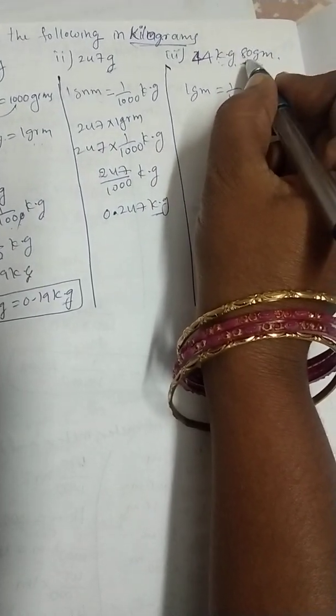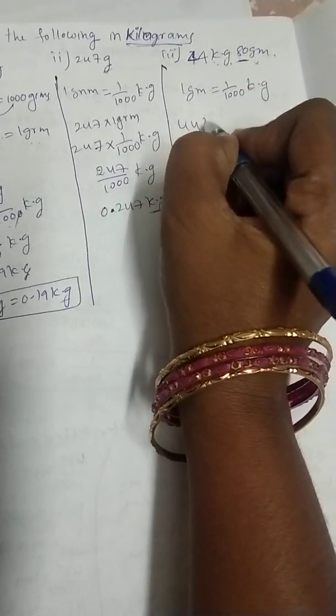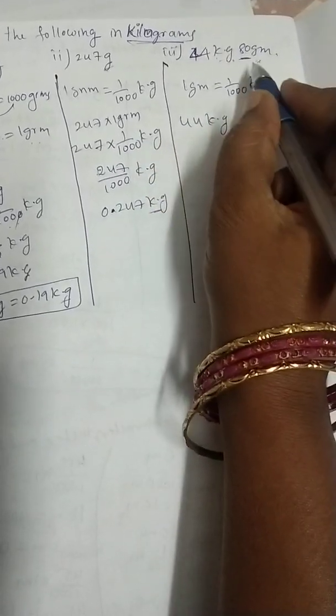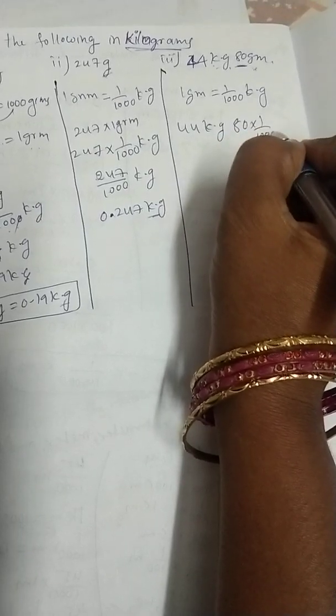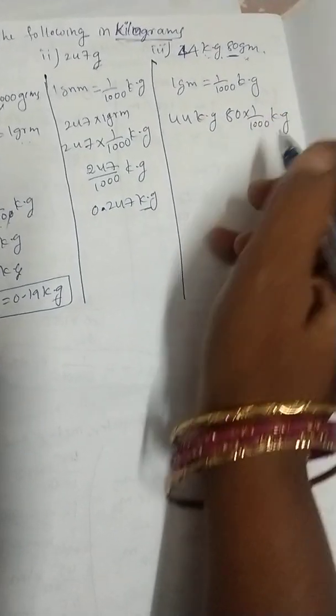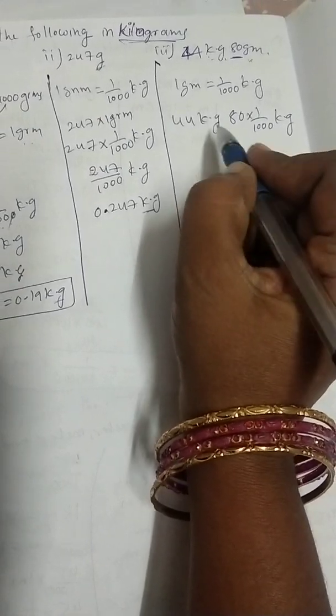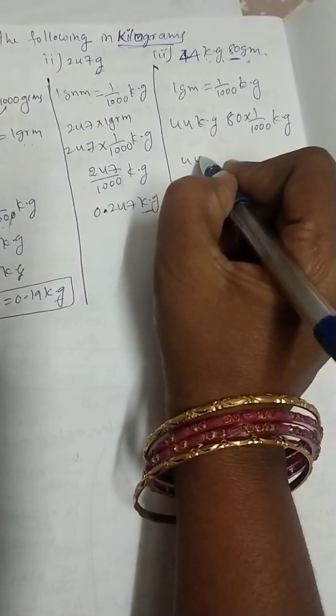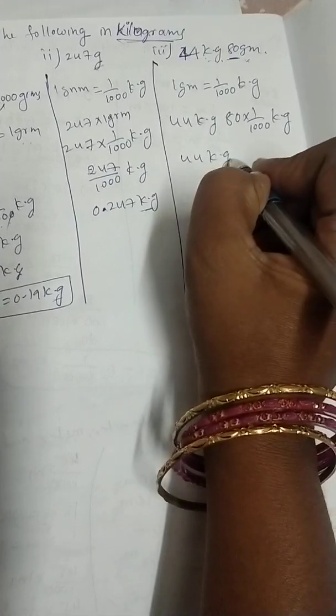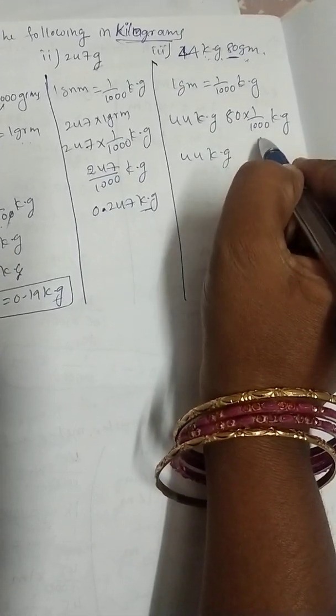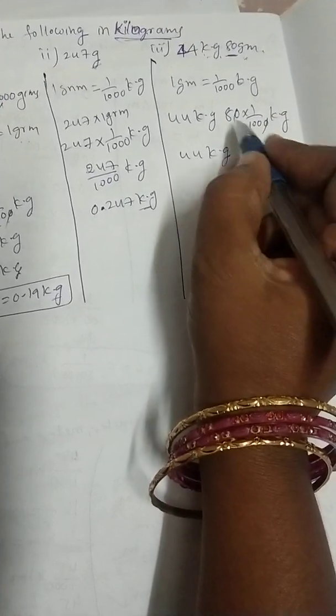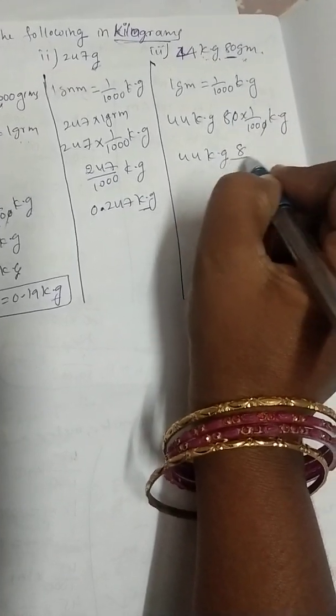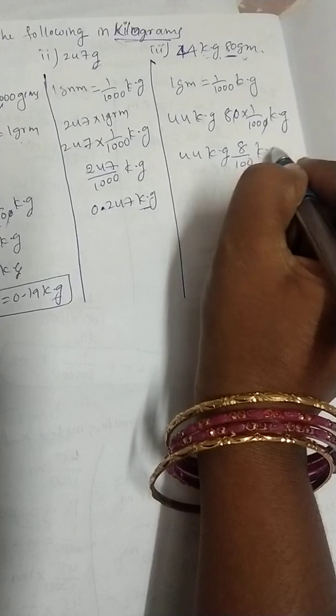Instead of this value, 44 kg like that only we should write, 80 grams, 80 into 1 by 1000 kilograms we should write. Now both are in kilograms. 44 kg, this we can write. Here 0, 0, we can do cancellation. Numerator, this denominator zeros will do cancellation. 8 by 100 kilograms.